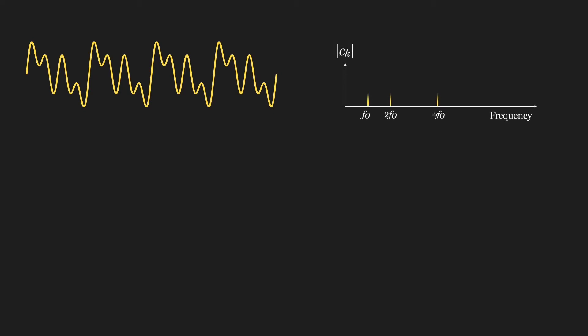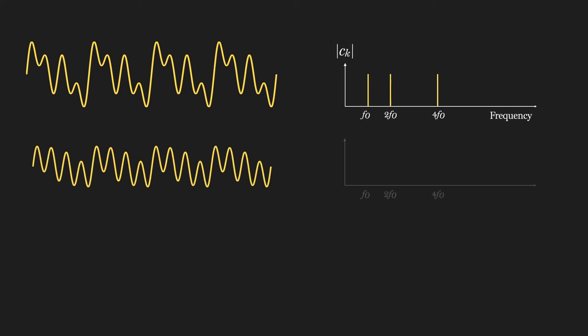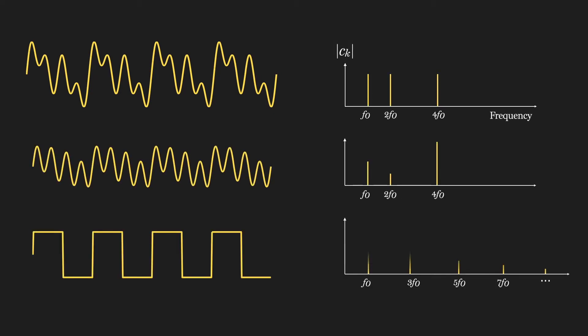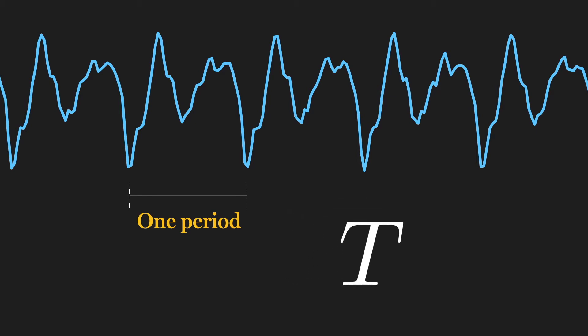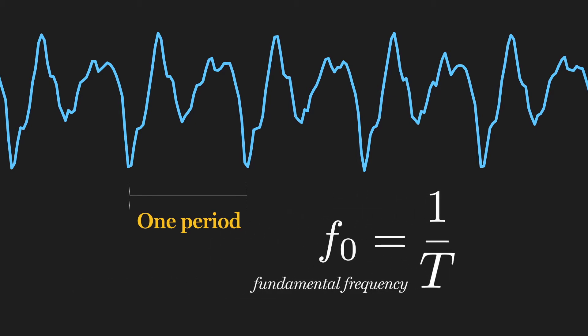In our last video, we introduced the Fourier series, which reveals the precise amount of individual frequencies present in periodic signals. But remember that in the Fourier series, the component frequencies are all harmonics, or multiples, of the fundamental frequency, which is the inverse of the period of the signal. This works great for periodic signals, but many, if not most, signals aren't precisely periodic, or even close to periodic.